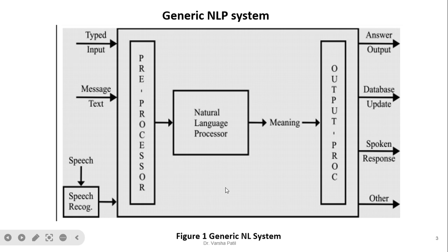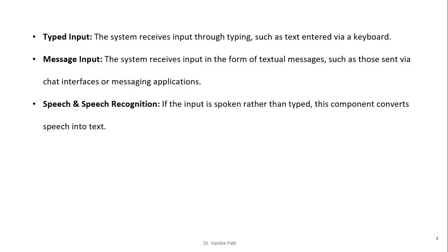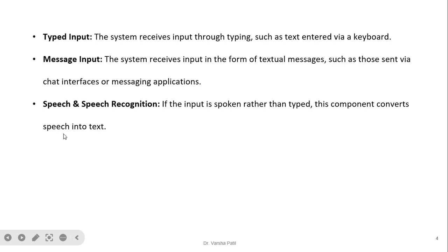The output may be normal text, a database update, a spoken response, or another type of response based on the particular application. Now we will see each sub-block one by one. Type input: the system receives input through typing, such as text entered via a keyboard. Message input: the system receives input in the form of a textual message, such as those sent via a chat interface or messaging application. Speech and speech recognition: if the input is spoken rather than typed, this component converts the speech into text.